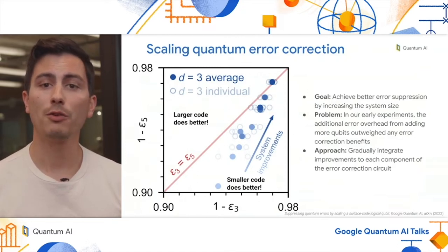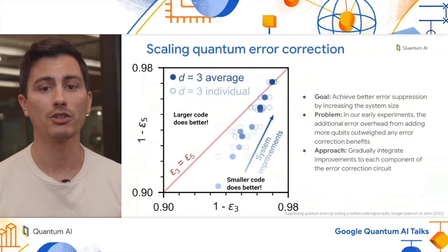When you're above the red line in this plot, that means that the larger distance 5 code is doing better, and when you're below the red line, that means the smaller distance 3 qubit is doing better. As you can see by the data, when we first started doing these experiments, the additional overhead from adding more qubits outweighed any error correction benefits. However, as we gradually integrated improvements to each component of the error correction circuit, we were finally able to achieve a distance 5 logical qubit which outperformed the distance 3 qubit.